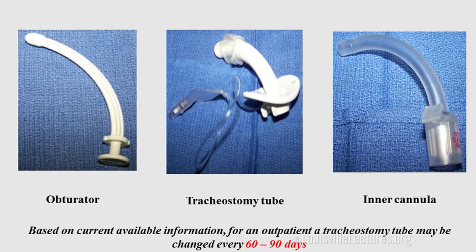This is an obturator. This is a tracheostomy tube, which is a plastic tube or Shiley. And this is the inner cannula. With the Shiley plastic tube, you can change it every 60 to 90 days — some manufacturers recommend earlier change. We also have another kind of tube, which is a metal tube, and it can be left forever, lifelong.